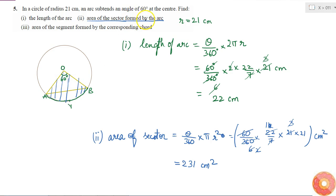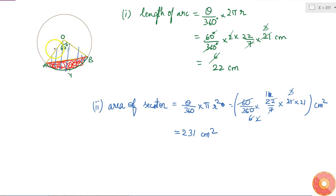Finally, find the area of the segment formed by the corresponding chord. The chord AB gives the segment area, which equals area of the sector minus area of triangle OAB. This triangle is formed by two radii and a chord, so it is isosceles. Since the central angle is 60 degrees and both sides are equal to the radius, the base angles are also equal, and all three angles must be 60 degrees.